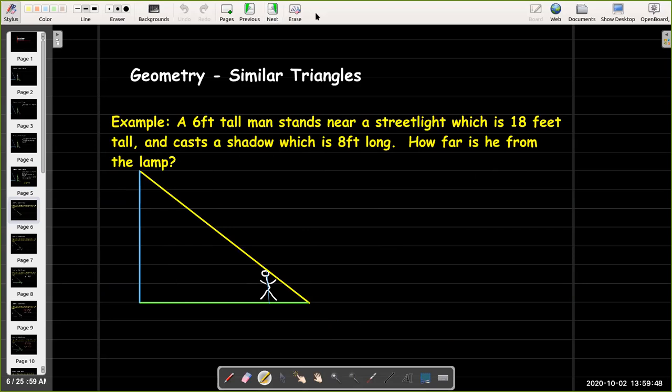So let's look at an example we're going to make use of that. You've got a man he's six feet tall he's standing a certain distance away from a lamppost and that lamppost or street light is 18 feet tall and he's going to cast a shadow which is eight feet long behind him. So let's go ahead and put those numbers on our diagram because we'd like to find out how far is the man standing from the street light or from the lamppost.